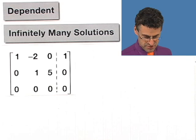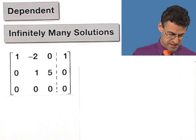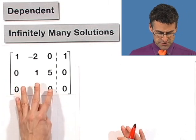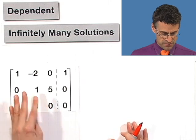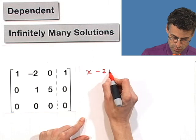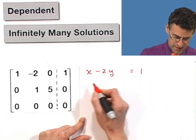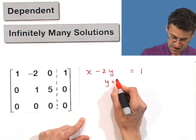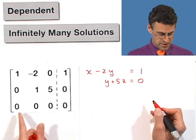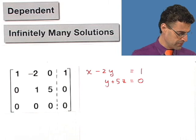And just to remind you of how we'd go about that, this tells us that the variable z can be thought of as being a free variable. Let me first of all translate each of these rows into the corresponding equation. x minus 2y plus 0z equals 1. And this is y plus 5z equals 0. And that last one just says 0 equals 0. And notice there's no constraint on z, so we can let z be anything we want.